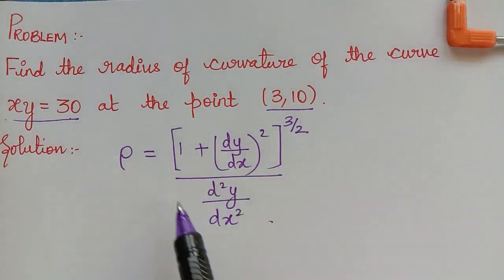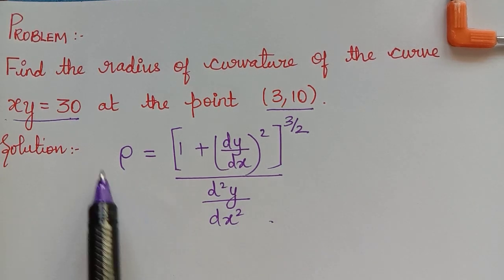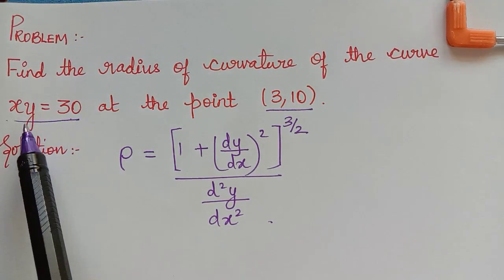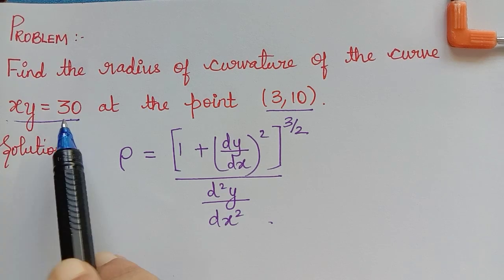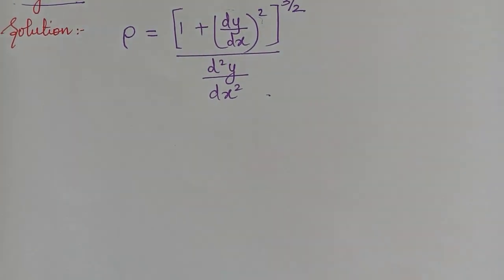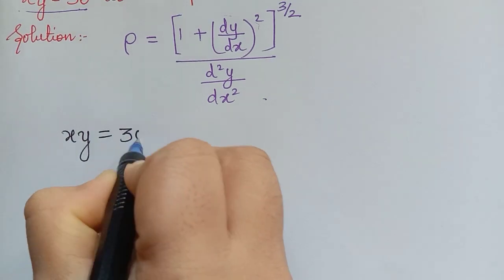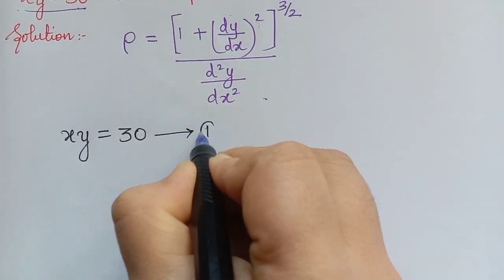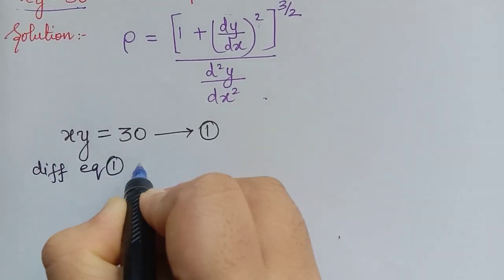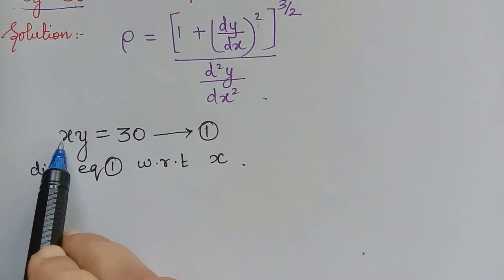We have to use this formula since the curve is given in Cartesian form. From xy = 30, we need to find dy/dx and d²y/dx², then substitute into the formula. Let us write the given equation xy = 30 as equation 1, and differentiate it with respect to x.